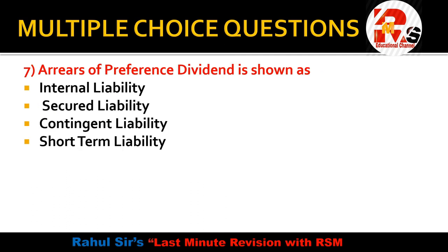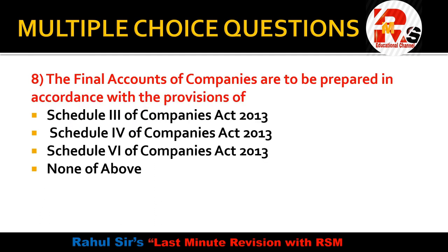Next question: Arrears of preference dividend — from the chapter of internal reconstruction — when we pay arrears of preference dividend, the entry involves a capital reduction account debit to bank account. This is an internal liability. Is it a secured liability, contingent liability, or short-term liability? It is treated as a contingent liability, because a contingent liability may or may not occur.